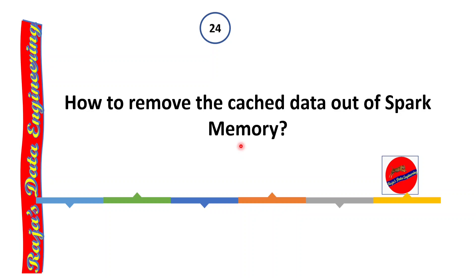How to remove cached data from Spark memory? Cache and persist are performance optimization concepts in Spark. If you have applied cache on a large data frame and need to free the memory, you use the unpersist command. Note that there is no uncache command in PySpark — the correct command to remove cached data is unpersist.